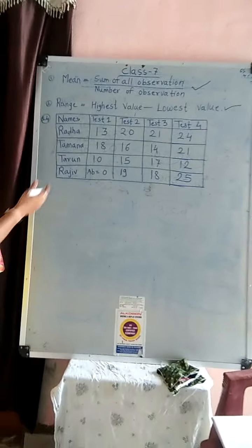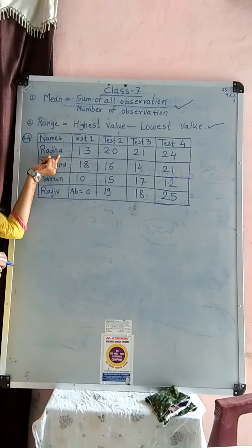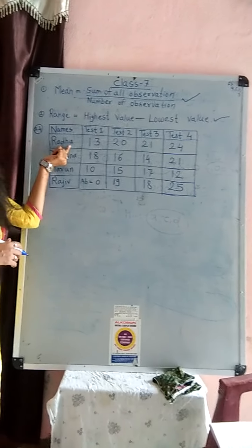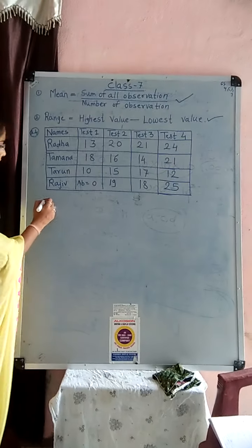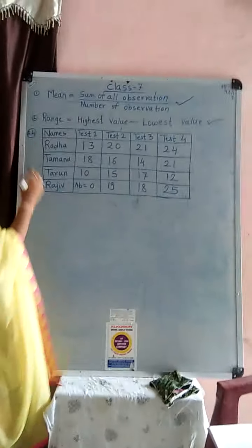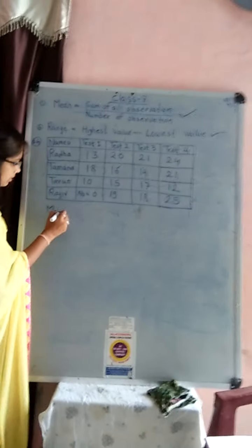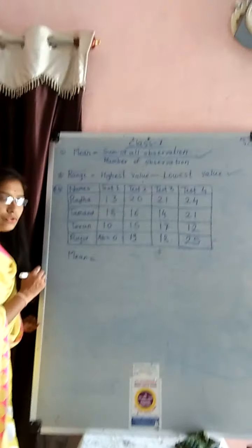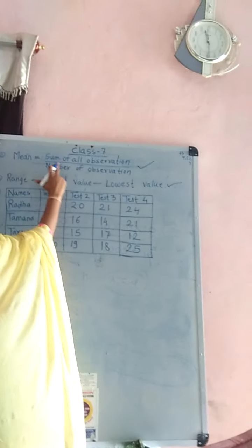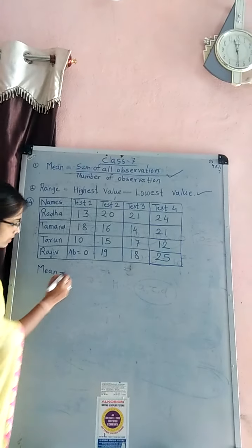So let's start. First, we solve the Radha's mean. Look at here. First, we write the structure of mean. Mean is equal to sum of all observation. So, right here,